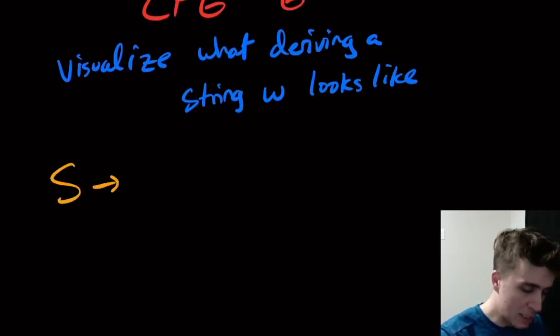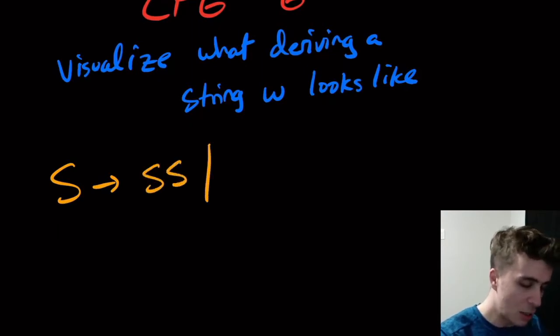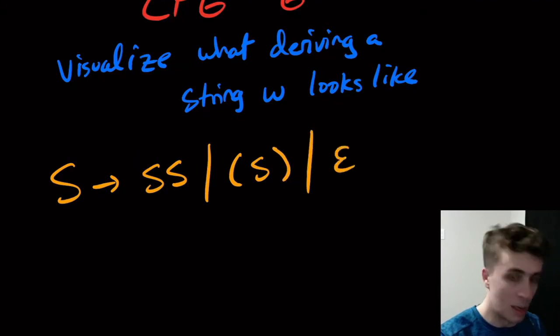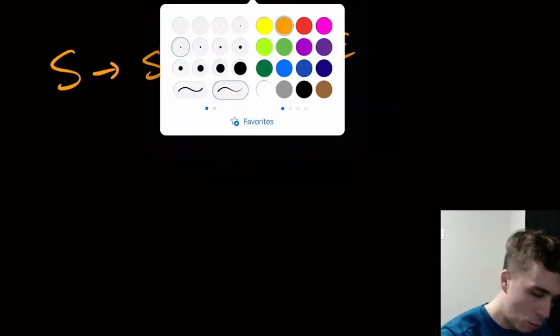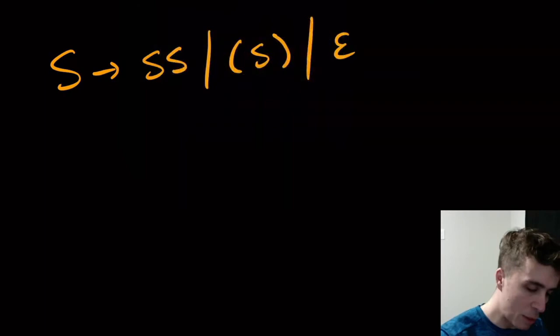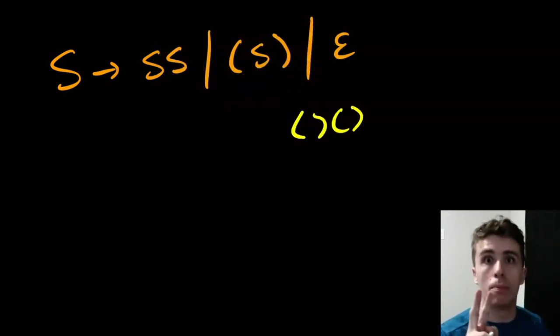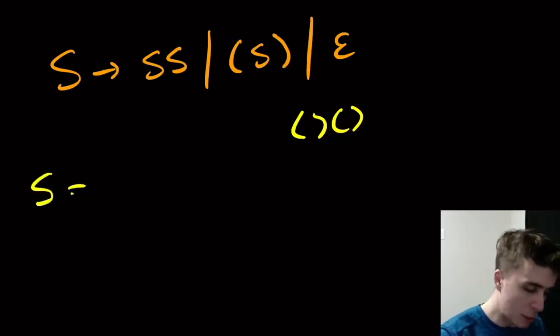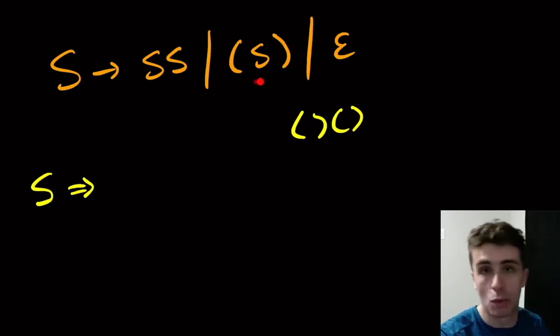Here I'm doing an example: S going to SS or left S right or epsilon. So that's the grammar for the set of balanced parentheses. Here I'm trying to derive the string left right left right, so that's the set of balanced parentheses and it's easily derivable in this grammar using the S goes to SS rule.